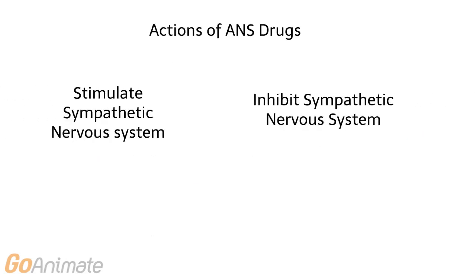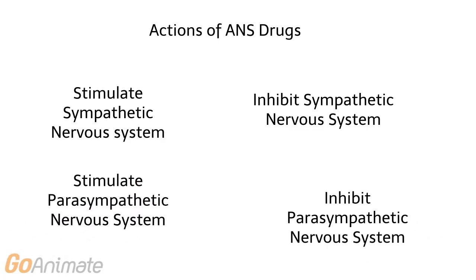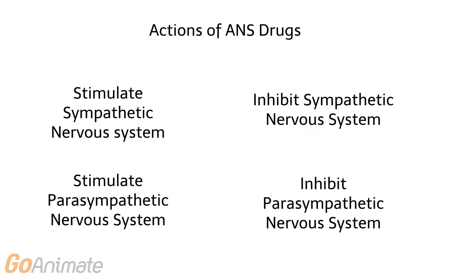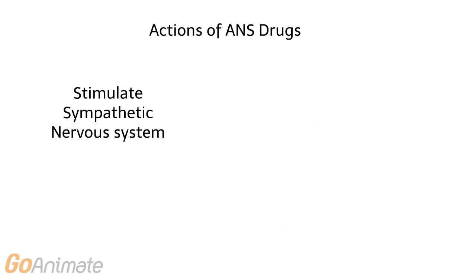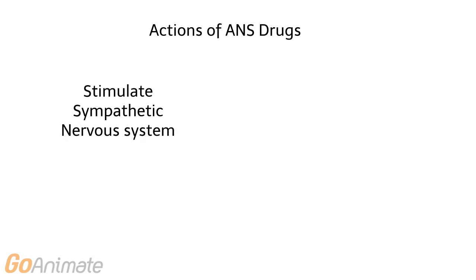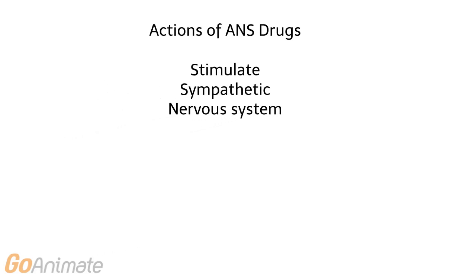Drugs affecting the autonomic nervous system have four possible actions: stimulation of the sympathetic nervous system, inhibition of the sympathetic nervous system, stimulation of the parasympathetic nervous system, and inhibition of the parasympathetic nervous system. We will be focusing on drugs that affect the sympathetic nervous system in this video.